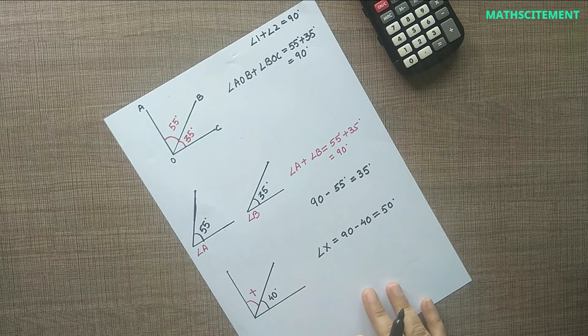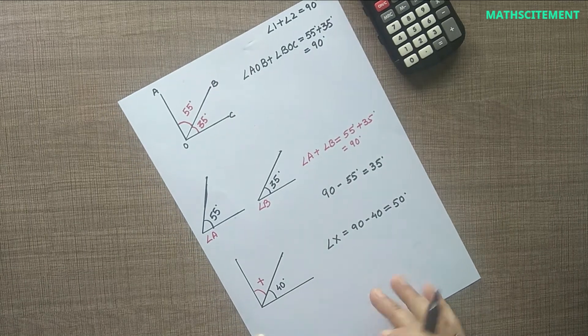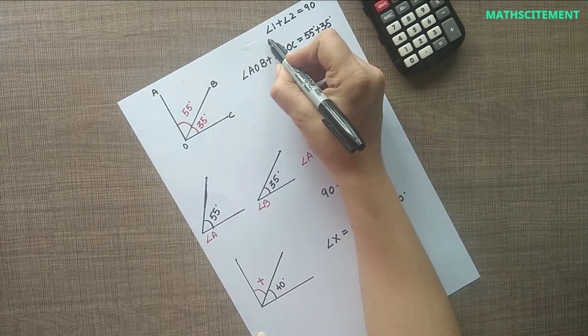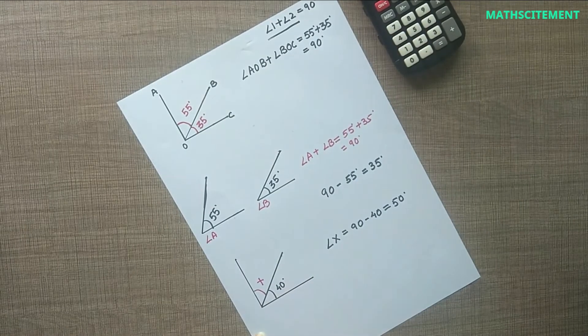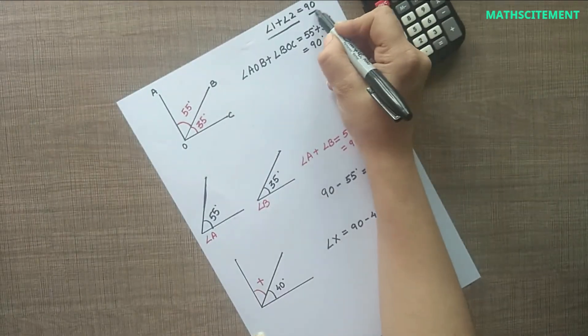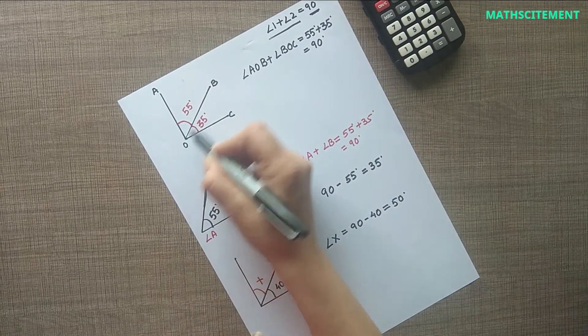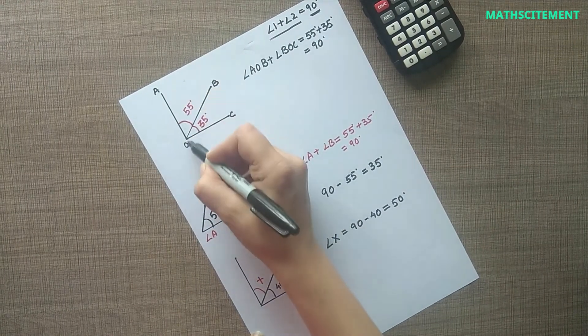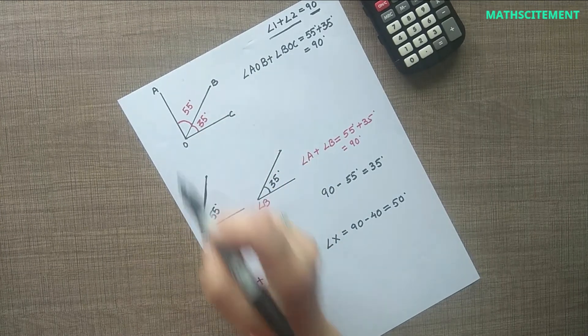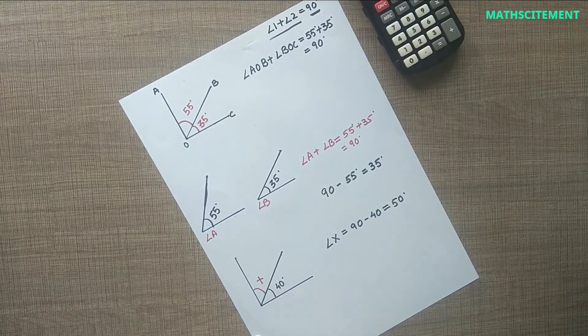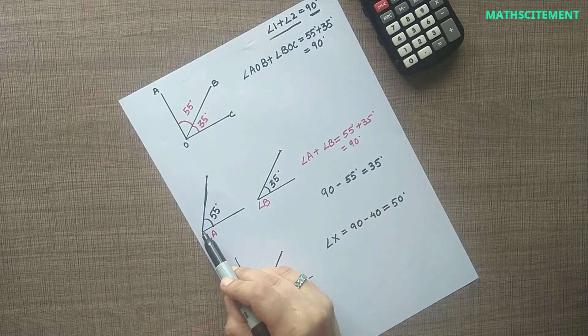Complementary angles are the pair of angles that when added up result in 90 degrees. They can be formed from the same vertex, lying next to each other, or can have different vertices that are not adjacent to each other.